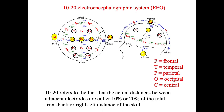EEG is a very good technique to record the activity of the brain. It is usually recorded in a system named the 10-20 EEG system. Here, 10-20 refers to the fact that the actual distance between adjacent electrodes is either 10% or 20% of the total frontal-to-back or left-to-right distance of the skull. We measure the distance between the left ear and right ear as the total distance.